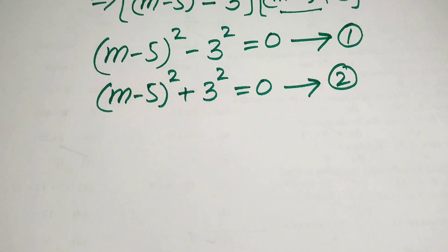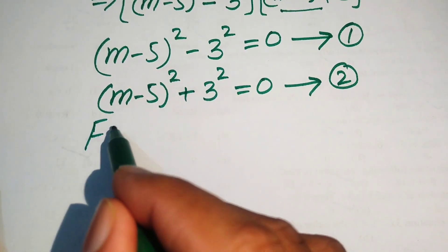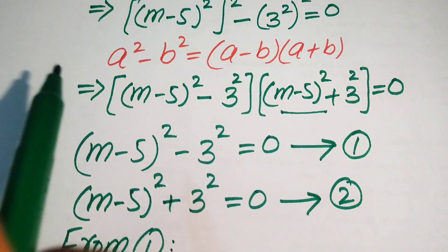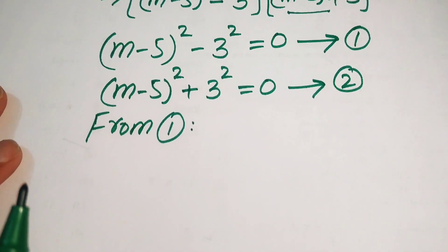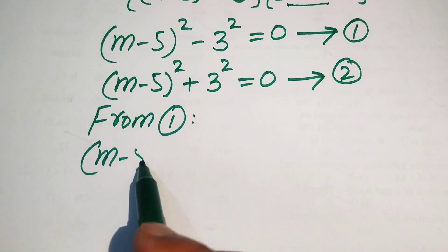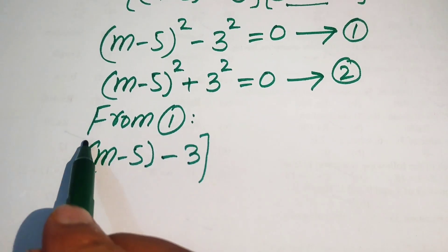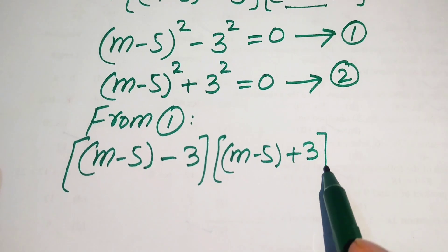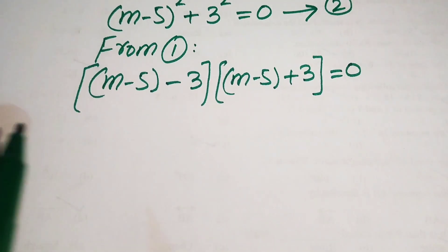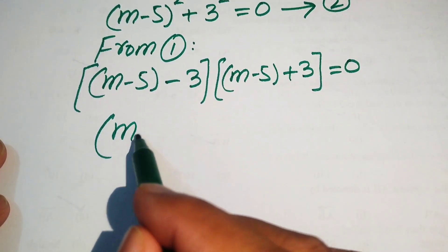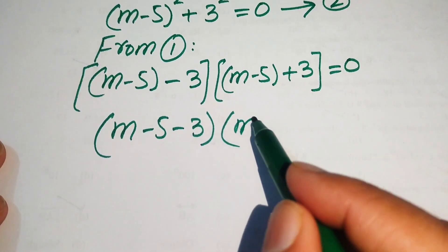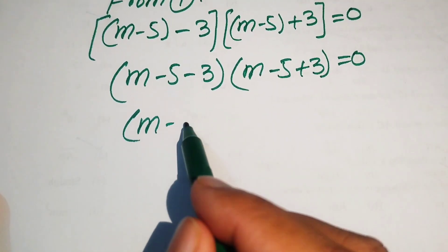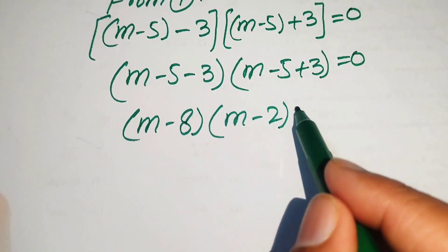Focusing on equation 1, we apply the difference of squares identity again: (m minus 5 minus 3)(m minus 5 plus 3) equals 0. Simplifying the brackets gives (m minus 8)(m minus 2) equals 0.